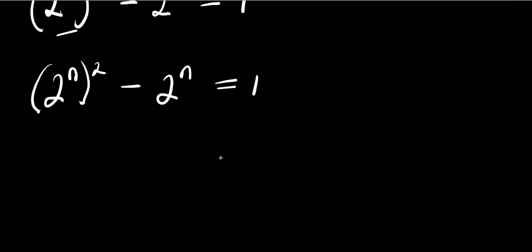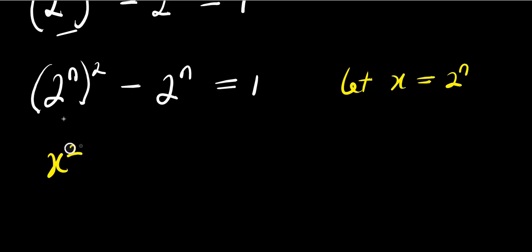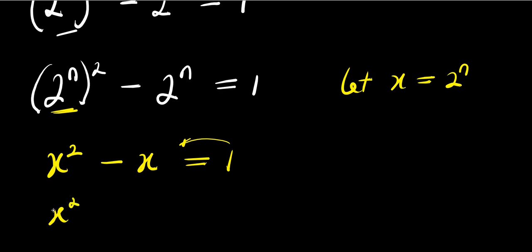From here, we simplify by substituting x = 2^n. This gives us x squared minus x equals 1. Moving everything to one side, we have x squared minus x minus 1 equals 0.